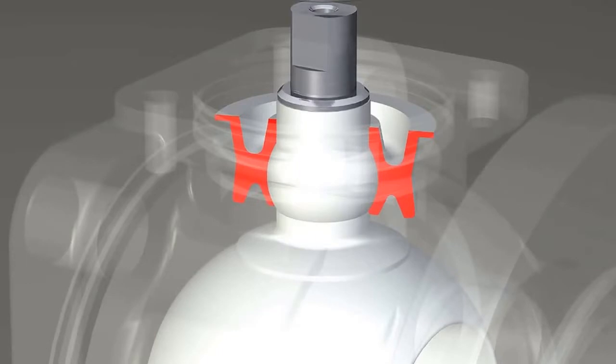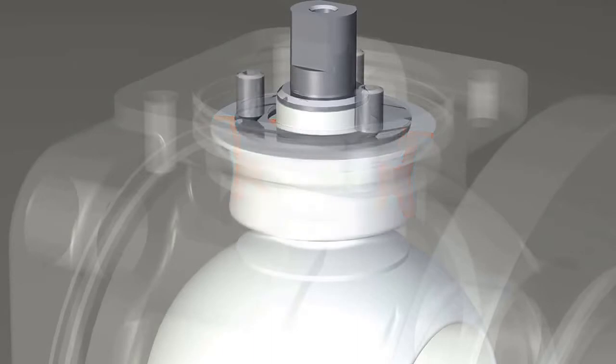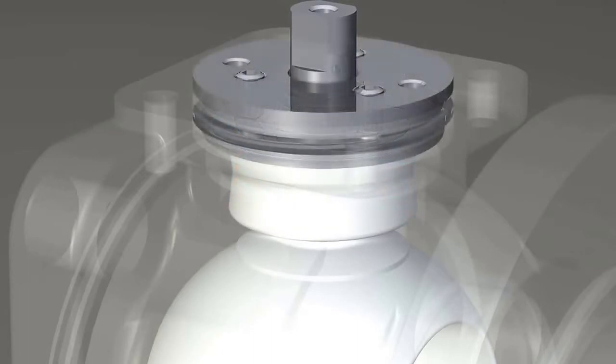The Xomox SX seal is mechanically energized by an adjustable thrust ring, which creates a secondary sealing backup. Springs and multi-layered stem packing are no longer required.